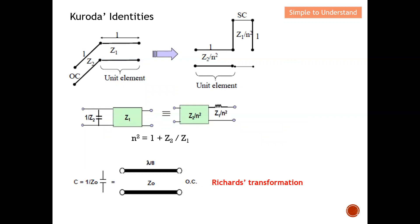In the next video I'm going to start the discussion on low pass filter design on microstrip line. As mentioned, I need both Richard's transformation and Kuroda's identity in order to fully discuss the low pass filter on microstrip line.